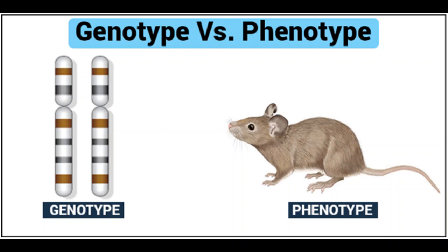There are two important terms: phenotype and genotype. Phenotype is the external makeup of an organism — what you can see externally, such as tallness. Genotype is the genetic makeup of an organism — the actual alleles present, such as capital T capital T or capital T small t. Even if two organisms look the same phenotypically, their genotypes may differ.